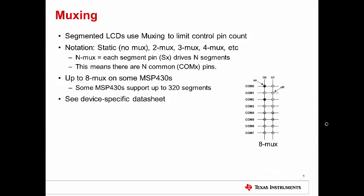Muxing allows a much larger number of segments to be controlled by a limited number of pins. If you have an 8 mux LCD, for example, you will have 8 common or com pins, and each SX or segment pin can drive 8 segments. So if you had an 8 mux capable part with 8 com lines and 40 segment pins, S0 through S39, then you could control 320 segments with only 8 plus 40, which makes 48 pins. Some MSP430s, like F67791, support up to 320 segment displays. However, you should see your device-specific datasheet to see how many segments your particular device supports.